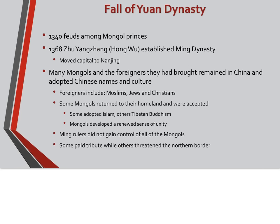In the 1340s, there were many feuds among Mongol princes. In 1368, Hongwu established the Ming dynasty and moved the capital from Beijing to Nanjing. As a result of the end of Mongol rule, some Mongols decided to stay in China along with the foreigners they had brought, including Muslims, Jews, and Christians. However, some Mongols returned to their homeland. Some adopted Islam, others Tibetan Buddhism in northwest China. The Mongols developed a renewed sense of unity, Ming rulers did not gain control of all Mongols, some paid tribute to China after the collapse of the Yuan dynasty, and some continued to threaten the northern borders.